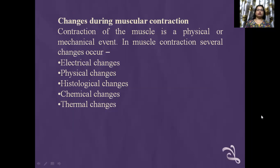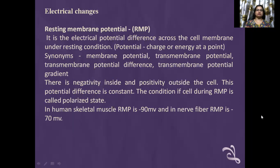Changes during muscle contraction. Contraction of the muscle is a physical or mechanical event. In muscle contraction, several changes occur: electrical changes, physical changes, histological changes, chemical changes, and thermal changes.